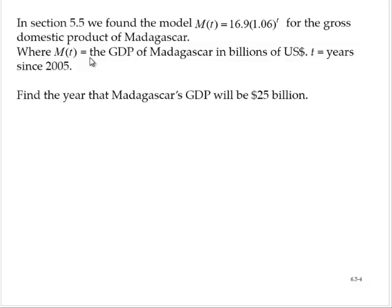In section 5.5, we found the model M of t is equal to 16.9 times 1.06 to the t for the gross domestic product of Madagascar, where M of t was the gross domestic product of Madagascar in billions of US dollars, t years since 2005. Find the year that Madagascar's GDP will be 25 billion.